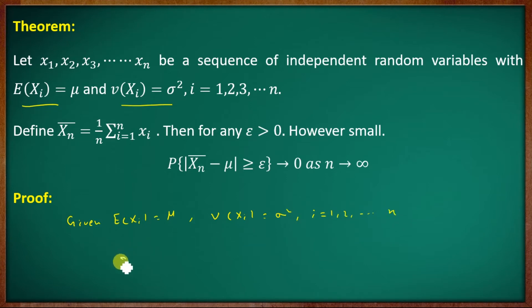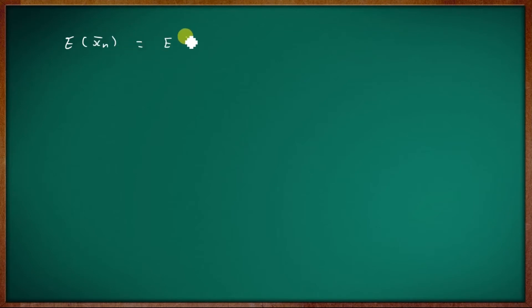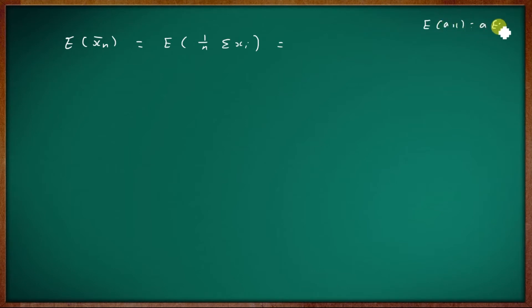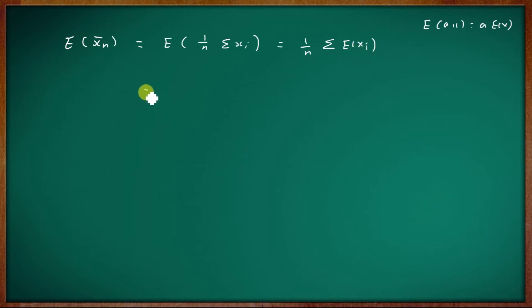Define x-bar-n equal to 1/n summation i equal to 1 to n of xi. So this is the sample mean. We call E(xi) equal to mu.